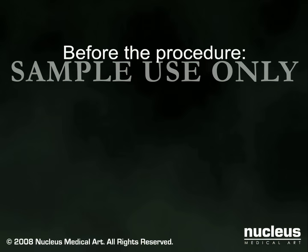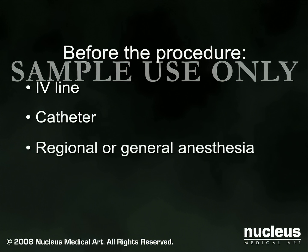When a cesarean section becomes necessary, you will be prepped for surgery. If not already in place, an intravenous line will be started and a catheter will be inserted into your bladder to drain urine. In the operating room, you will be given anesthesia. In most cases, a spinal anesthetic is administered to numb the lower portion of your body.